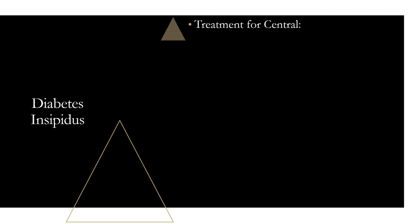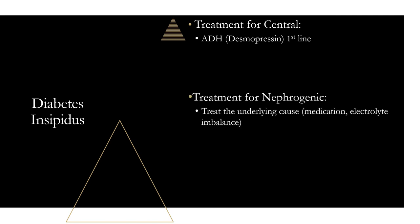For treatment: central DI is straightforward — give desmopressin (synthetic ADH), and fix any underlying cause. Nephrogenic DI treatment focuses on the underlying cause — is it lithium? An electrolyte imbalance? Fix that. Hydrochlorothiazide can be used; it causes mild hypovolemia and encourages the kidneys to retain salt and fluids. If caused by lithium, amiloride can be used — it prevents lithium entry into nephrons by blocking sodium channels, so lithium no longer has its effect on the kidneys while the underlying issue is addressed.